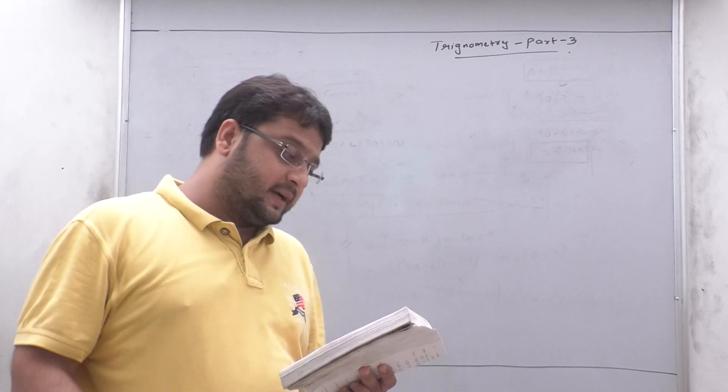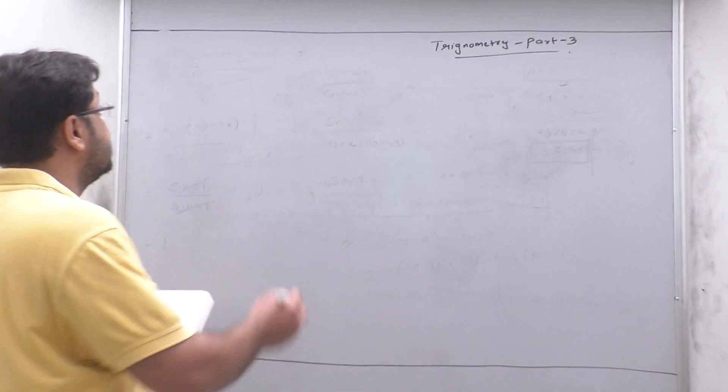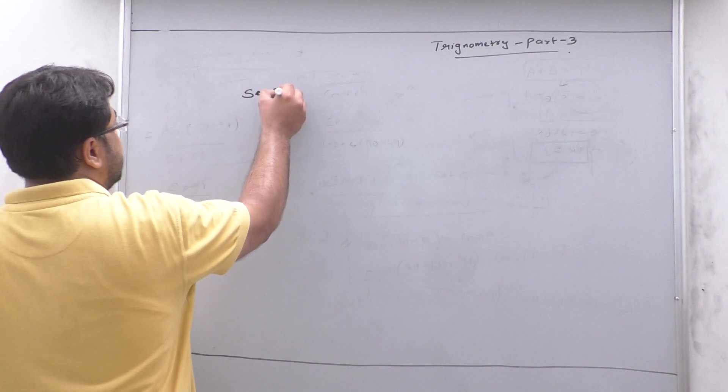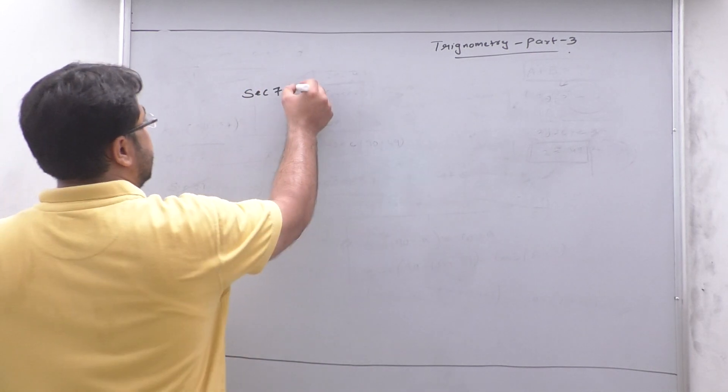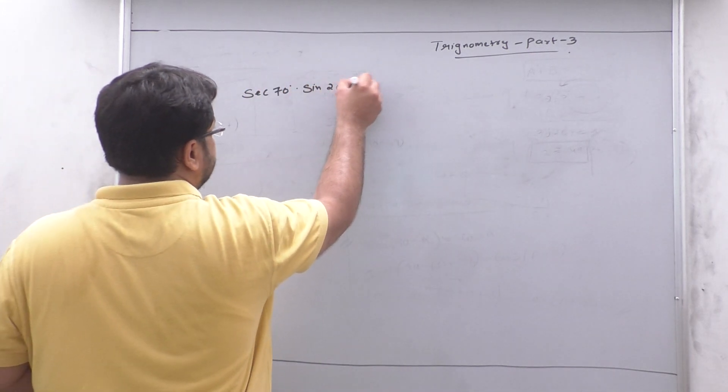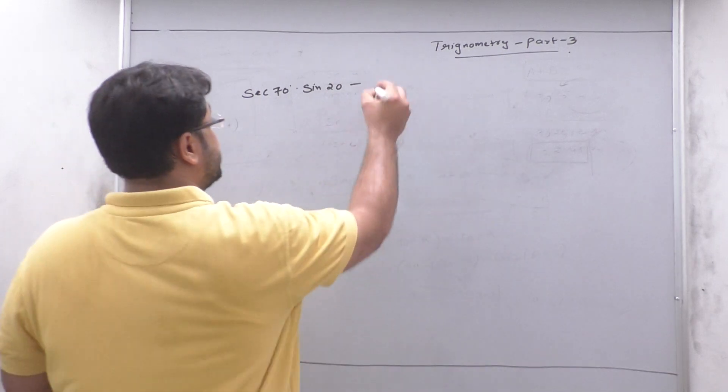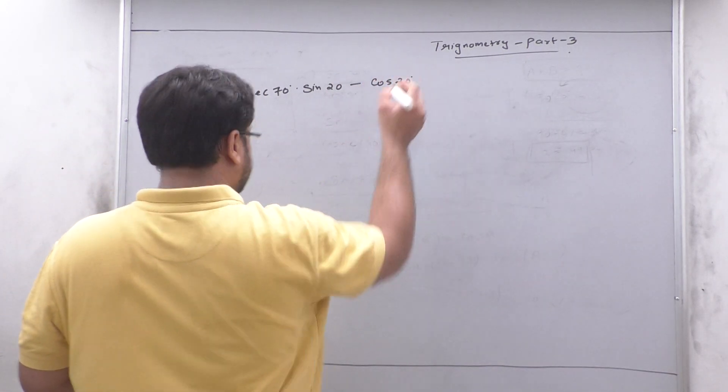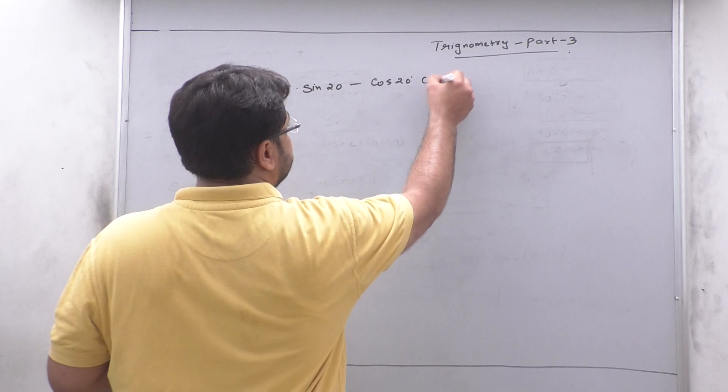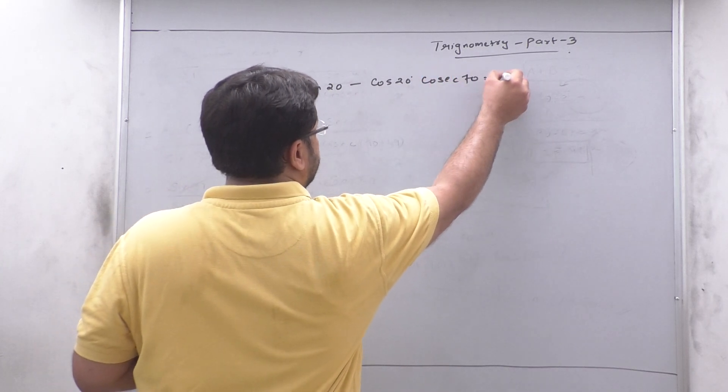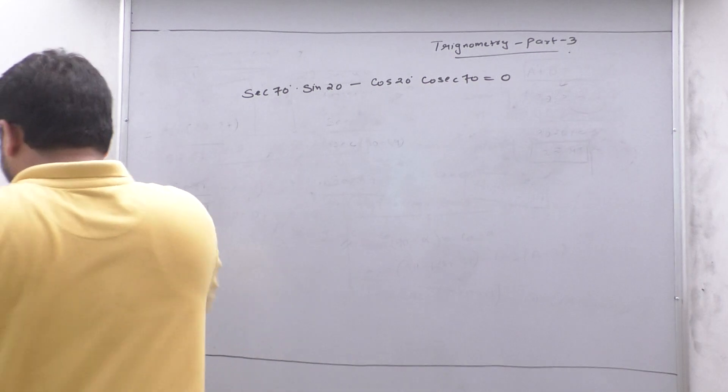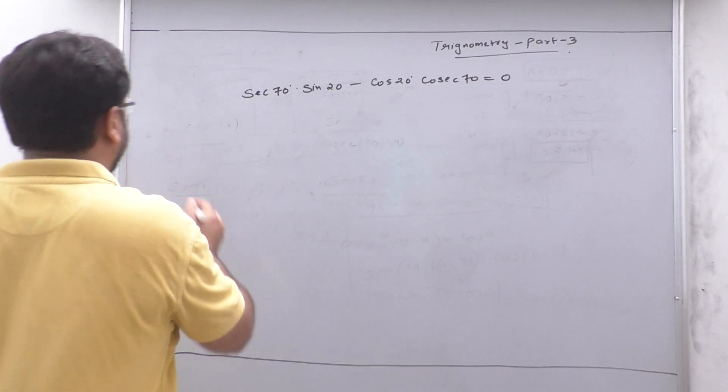Now we will see the second problem. This is the same problem. sec 70 sin 20 minus cos 20 cos 70 equal to 0. We will prove it. So this problem will be proved.